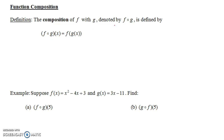The composition of f with g, denoted by f circle g — and this circle does not mean multiply, it's not a multiplication symbol — f circle g, or f composed of g, is defined by f circle g of x equals f of g of x. So here we're putting the function g inside the function f. G is the inside function, f is the outside function.